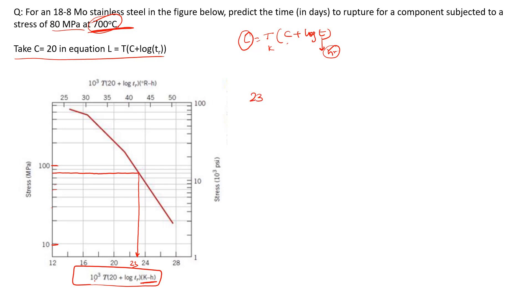It is in units of 10³, so 23 × 10³ equals T times C plus log t_R. Temperature T equals 700 plus 273 equals 973 Kelvin. C is given as 20. We need to find t_R. So 23,000 divided by 973 equals 20 plus log t_R.